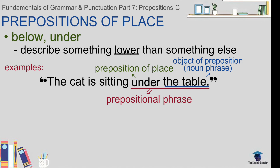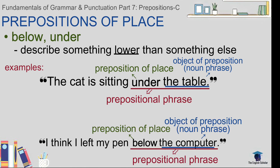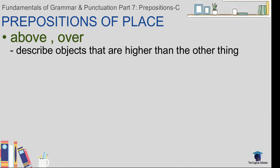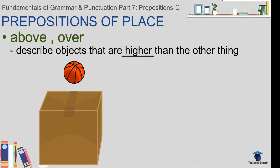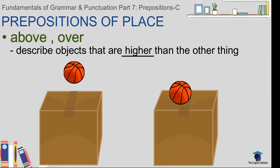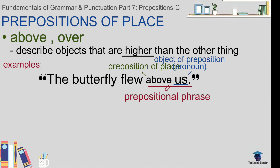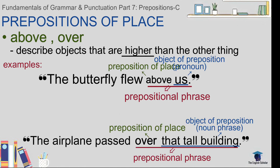Next: 'above' and 'over.' These prepositions describe something higher than another thing. Compared to 'on,' 'above' and 'over' are used for things that are over something else with some distance — unlike 'on,' where the object is perfectly touching the surface. For example: 'The butterfly flew above / over us.' Another example: 'The airplane passed over / above that tall building.'